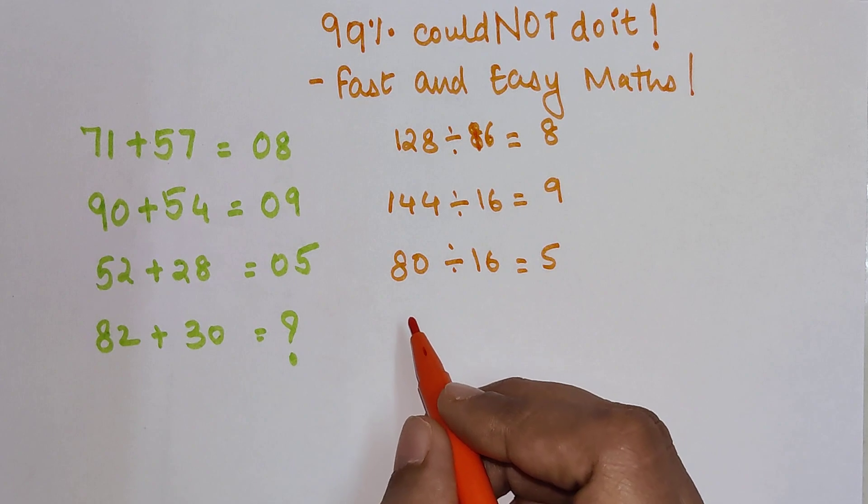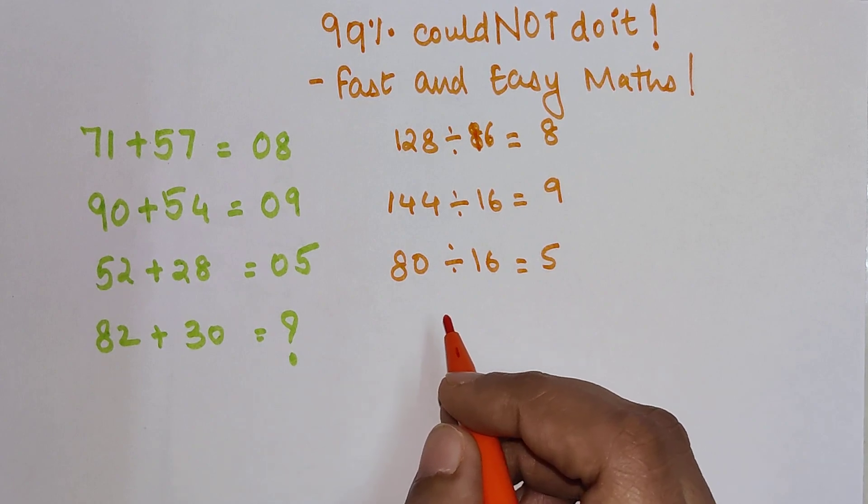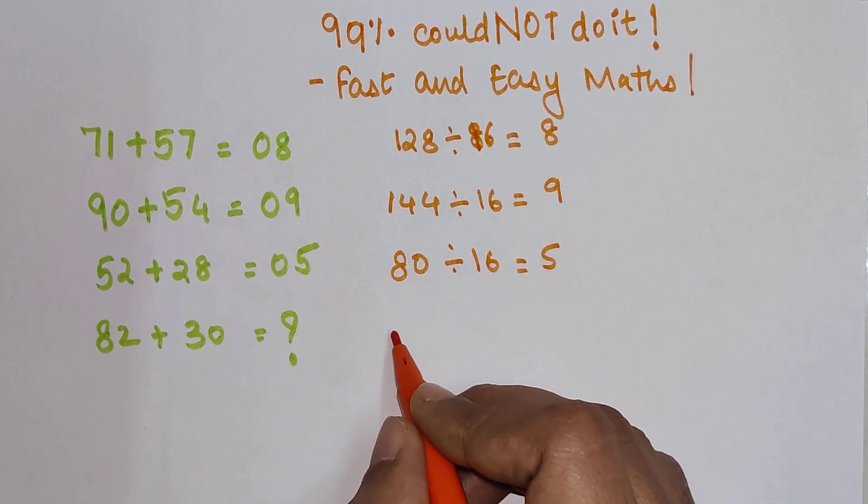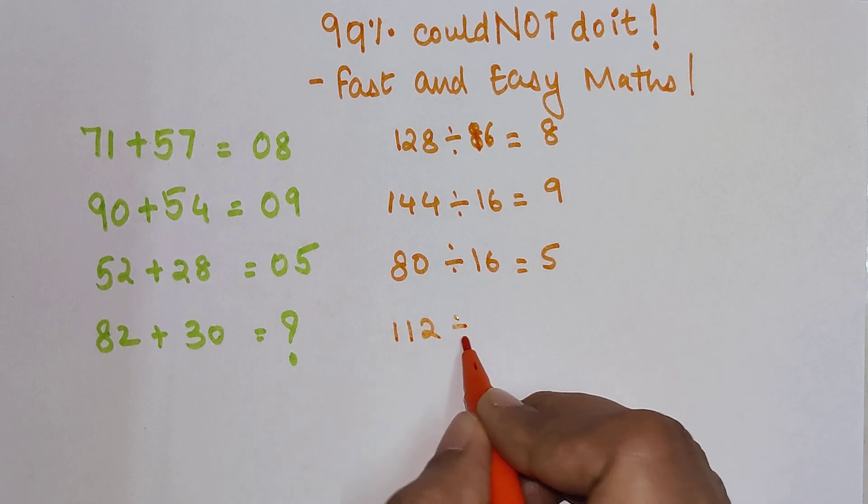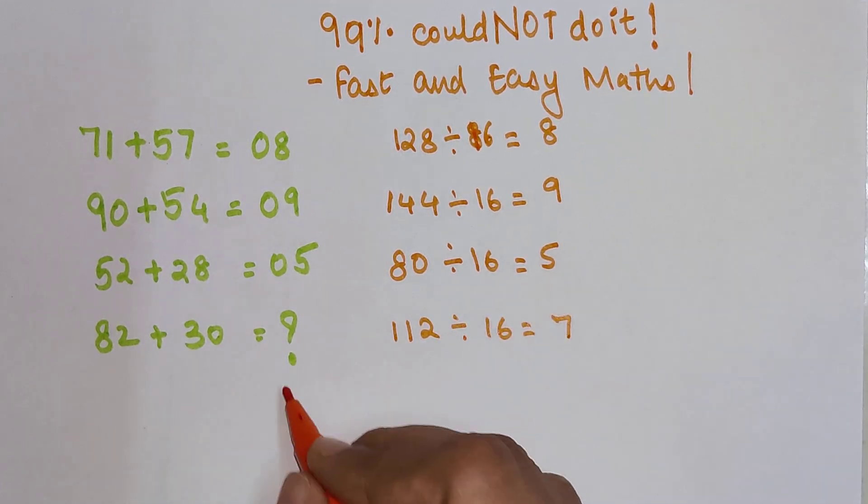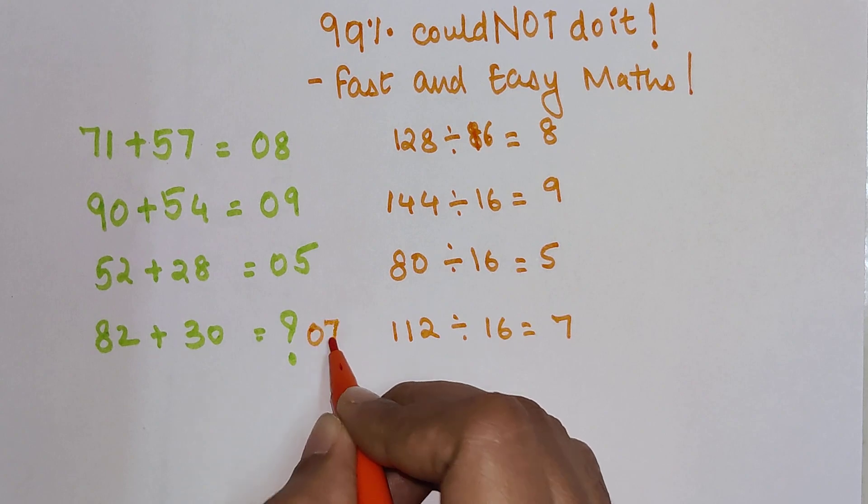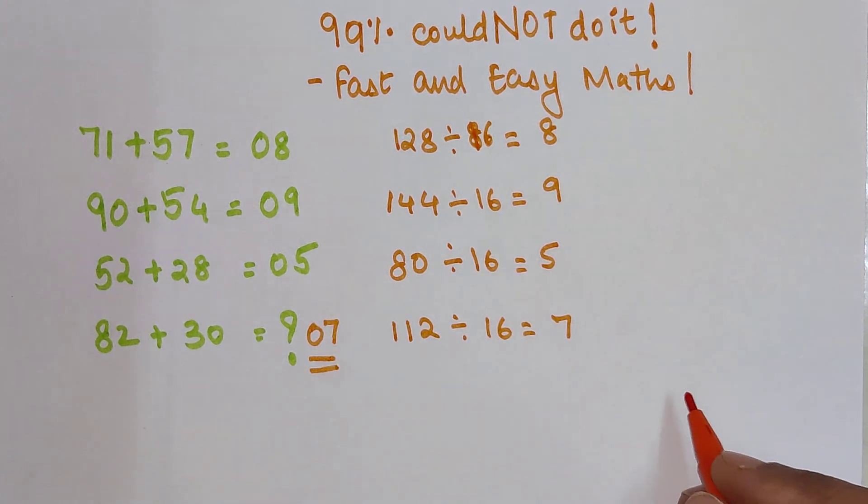Okay, so here when you add both of them, you get 82 plus 30 is getting 112. When you divide by 16, you get the answer as 7. So here your answer will be 07.